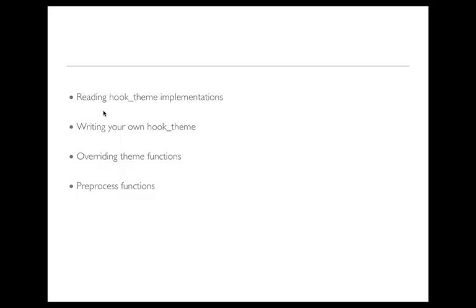So I wanted to go over the theme system a little bit, particularly hook_theme, which is a very important hook in Drupal theming. I wanted to show you how to read hook_theme implementations that have been written in other modules, as well as write your own, and basically understand what they're doing, how they work, and how some of the associated functions work. I'll also show you how to override theme functions and talk a little bit about preprocess functions, which are really important for getting the right data in your template files.